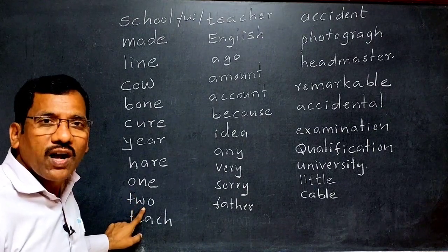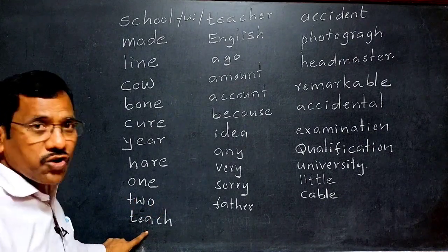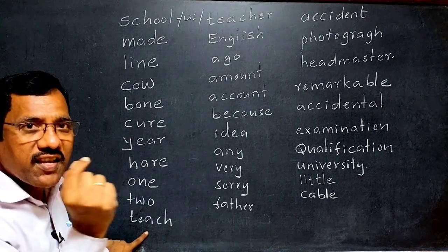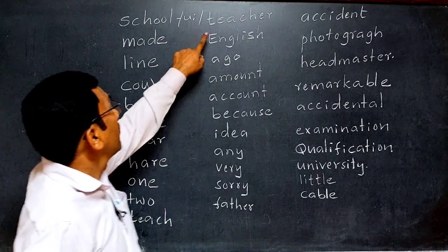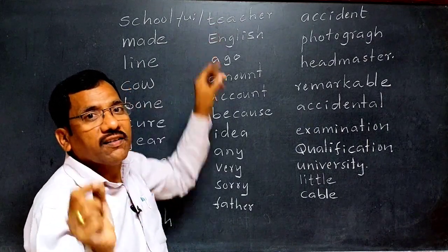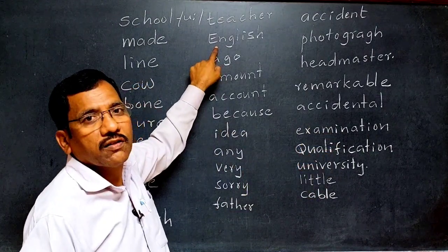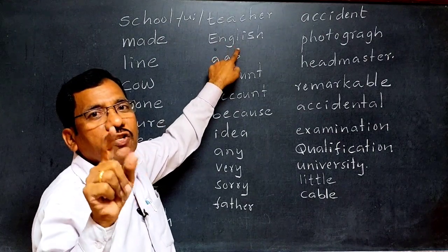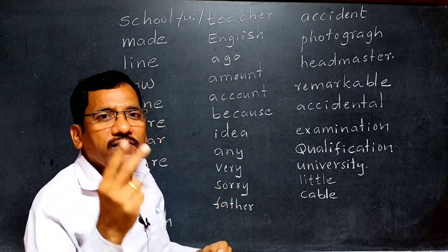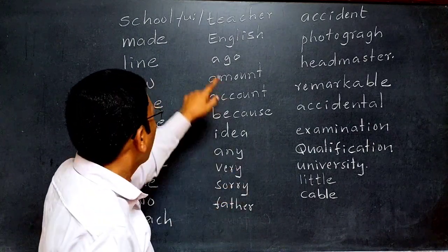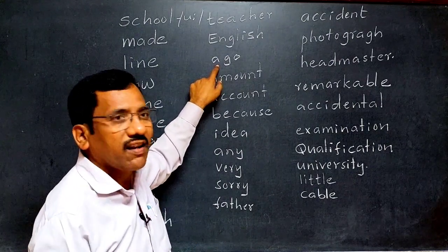Now, 'English' — 'Eng' and 'lish' — two vowel sounds, so 'English' is a word of two syllables. 'Ago' — two vowel sounds, so two syllables. 'Amount' — two vowel sounds, so it is a word of two syllables. 'Account' — two vowel sounds, two syllables. 'Because' — two vowel sounds, two syllables.